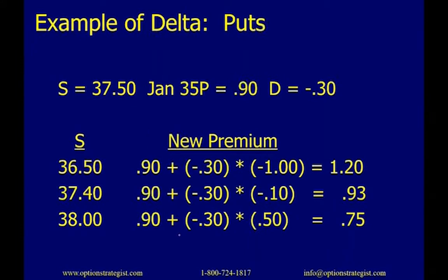Here's an example of delta for puts — really the same thing, except the delta for puts is negative, so we have to be careful. At $36.50 — down a dollar — we have the original 90-cent premium plus (−0.30 × −1.00) = we're adding 30 cents to the 90 cents for a new premium of $1.20. If the stock went down 10 cents to $37.40, we do the same calculation and get $0.93. And if the stock went up, the premium goes down — exactly what you'd expect for puts.